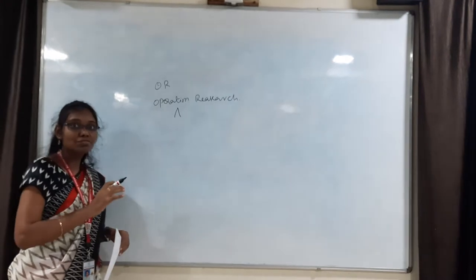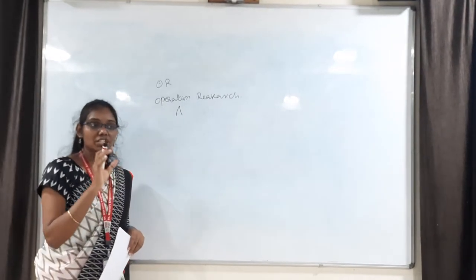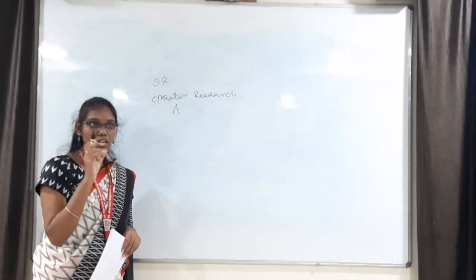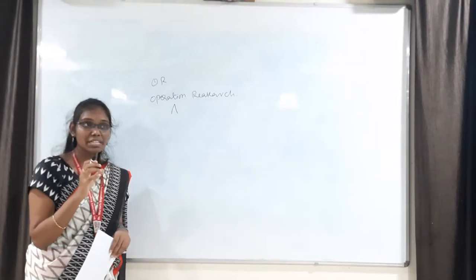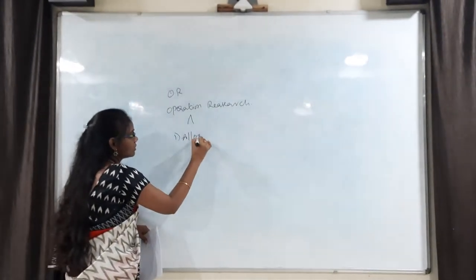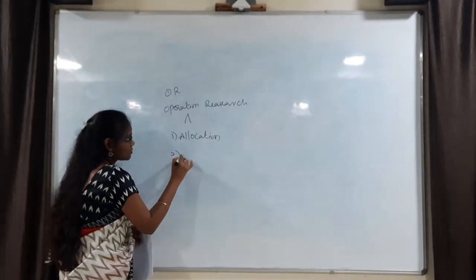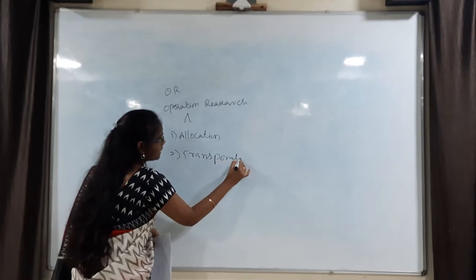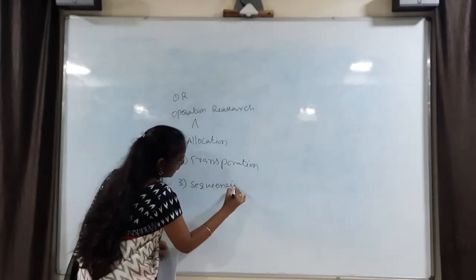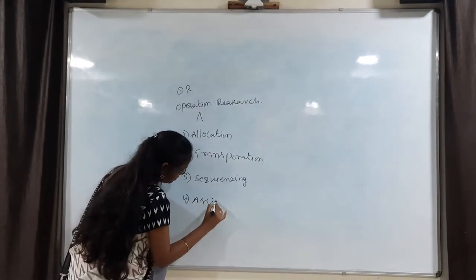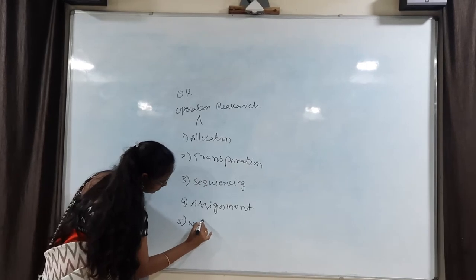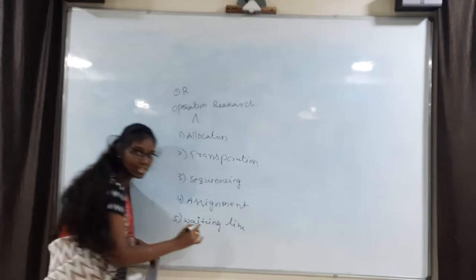In Operations Research, we get different problems from different sectors and we always search for answers to those problems using very technical methods. There are different types of operations: the first one is allocation, the second one is transportation, the third one is sequencing, the fourth one is assignment, the fifth one is waiting lines, and the sixth one is dynamic programming.